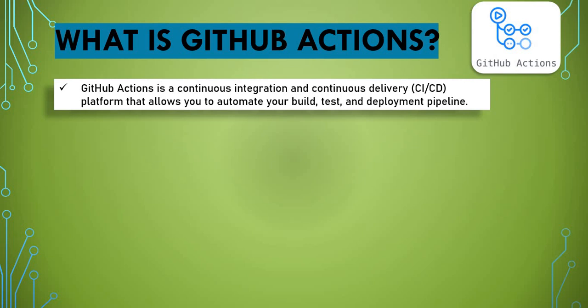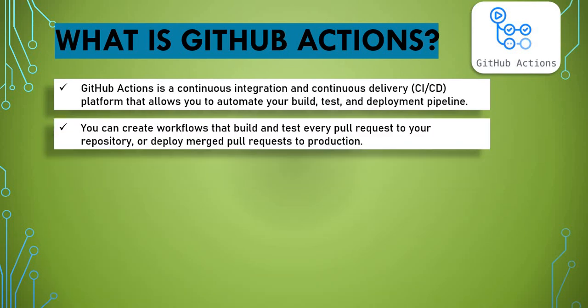As part of GitHub Actions you create workflows that build and test every pull request to your repository, or deploy your merged pull request to production. Different kinds of events can trigger GitHub Actions workflows. Any changes, pull requests, or merge requests into your Git repository can trigger this CI/CD pipeline.